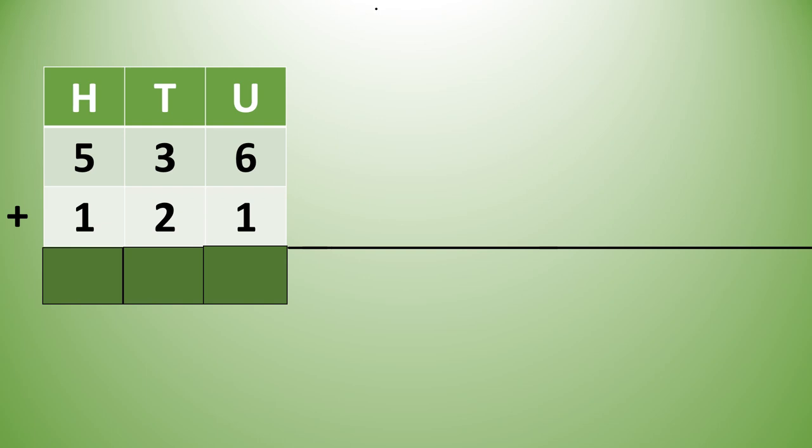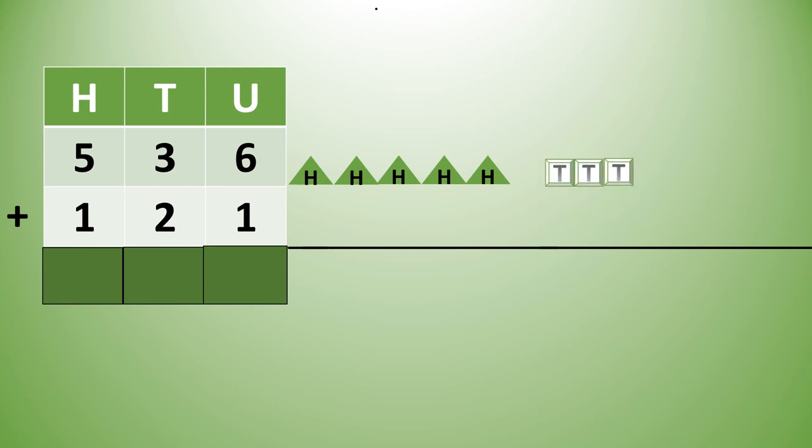536 plus 121. For 100s we draw H, for 10s we draw T, and for units U. So 5 hundreds, 3 tens, 6 units.